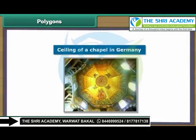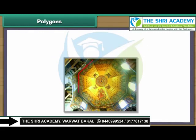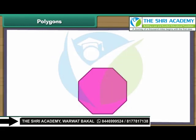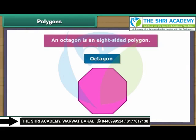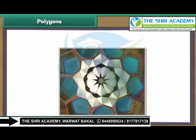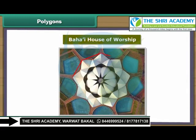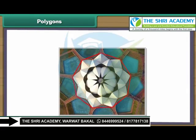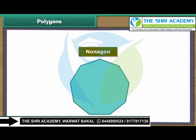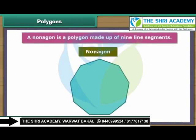This is the ceiling of a chapel in Germany. It has eight sides. An octagon is an eight-sided polygon. Look at this image — it is the Bahá'í house of worship. All Bahá'í houses of worship have nine sides. A nonagon is a polygon made up of nine line segments.